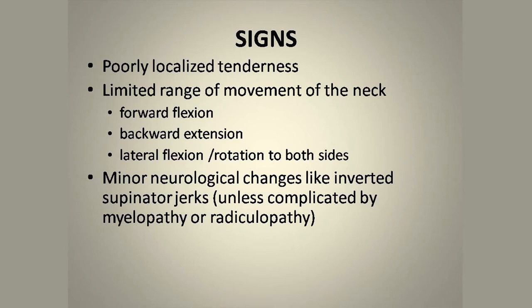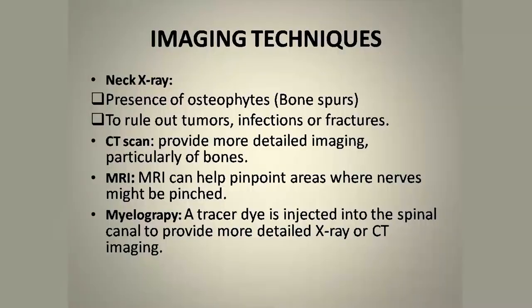There will be limited range of movements. We have to check forward flexion, backward extension, lateral flexion, and rotation to both sides, which can indicate involvement of specific dermatomes. Minor neurological changes like inverted supinator reflex may be present unless complicated by myelopathy or radiculopathy. Sometimes cervical cord compression myelopathy is involved, and Hoffman's sign may be significant of cervical cord compression myelopathy. On imaging, a plain neck X-ray can show osteophytes — also called bone spurs — confirming degenerative changes and ruling out tumours, infections, or fractures.